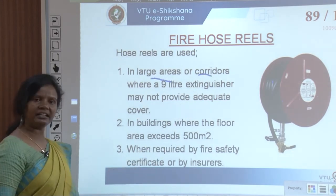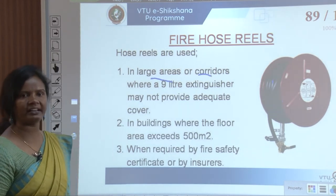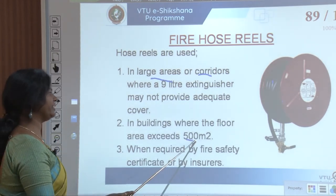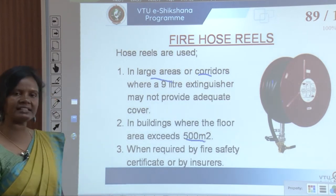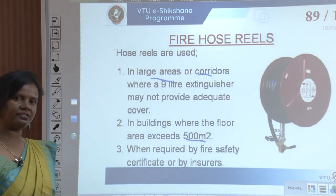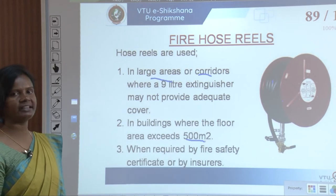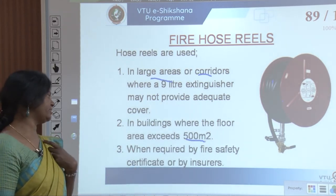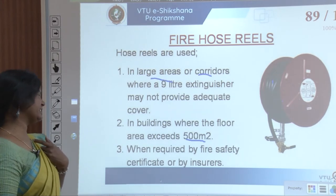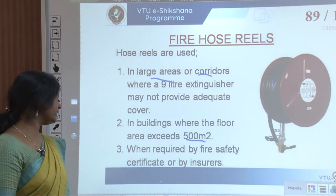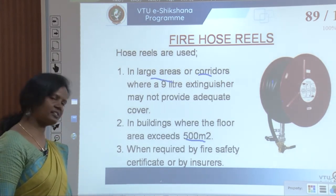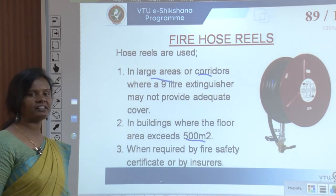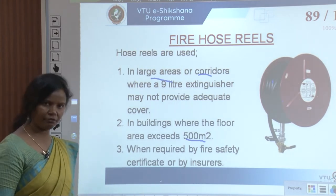In buildings where the floor area exceeds 500 square metres, fire hose reels are required when specified by the fire safety certificate or by fire insurance.